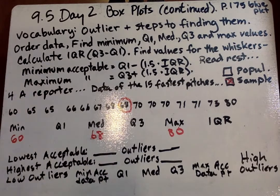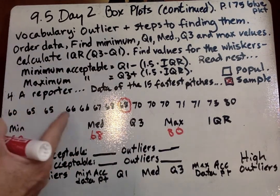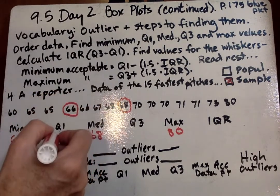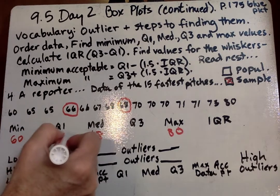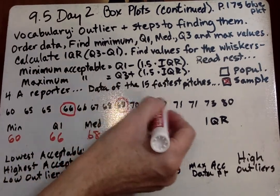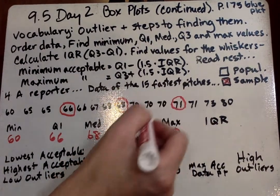So that splits the data in half. Now from quartile 1, we go 1, 2, 3, 4, 5, 6, 7. So our middle one is 66, is going to be quartile 1. Then we go quartile 3, which is going to be right over here. 1, 2, 3, there's our fourth number right there. So that's 71.